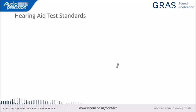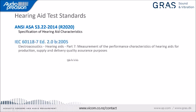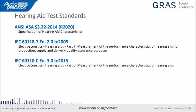Now let's talk about hearing aid test standards. One of the main ones is ANSI S3.22, last revised in 2014 and reaffirmed in 2020, titled Specification of Hearing Aid Characteristics, widely used for production tests. A similar standard is IEC 60118, a multi-part series. Part 7 is titled Measurement of the Performance Characteristics of Hearing Aids for Production, Supply and Delivery Quality Assurance Purposes. The two are virtually identical with just a couple of different tests.